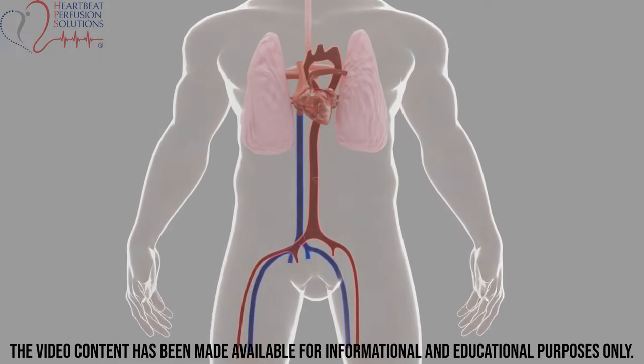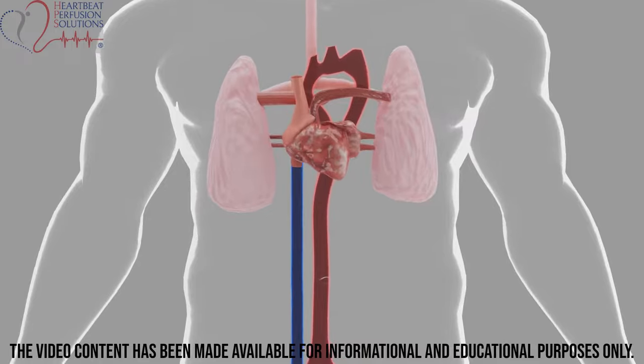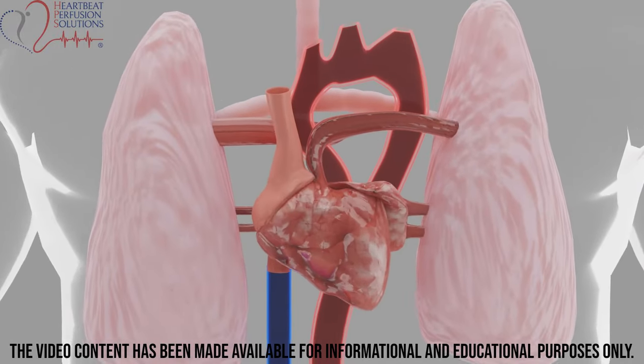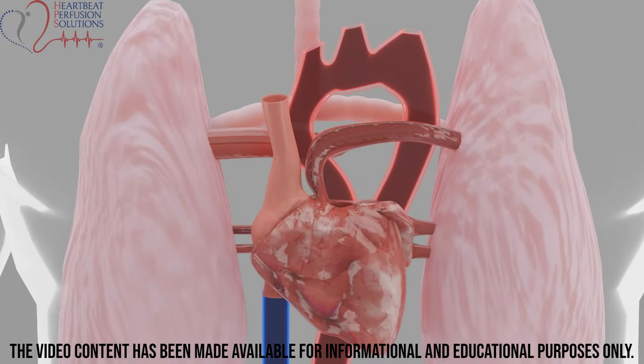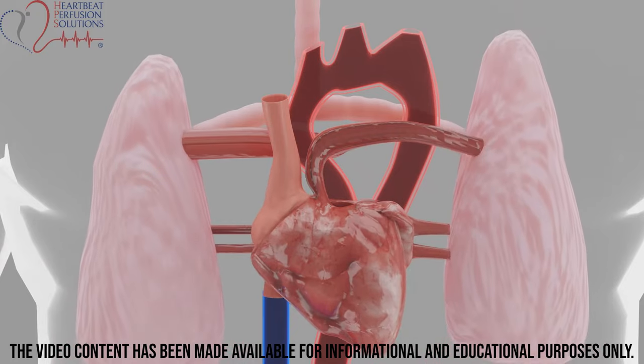As the central part of the circulatory system, the heart has dual responsibilities of pumping oxygenated blood to the body and pumping oxygen-poor blood to the lungs.